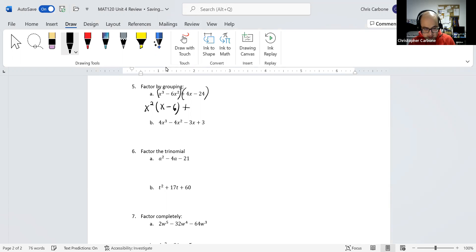Plus, from 4x and negative 24, we can take out a 4 times x minus 6.